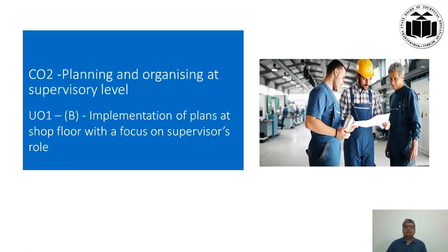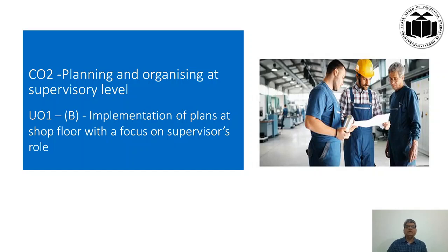You have already understood what is course outcome 2 — that is planning and organizing at supervisory level. Throughout this course outcome we will look into the duties and responsibilities of supervisors at the shop floor as far as planning and organizing is concerned. In this part we are going to look into the implementation of plans at the shop floor with a focus on the supervisor's role.